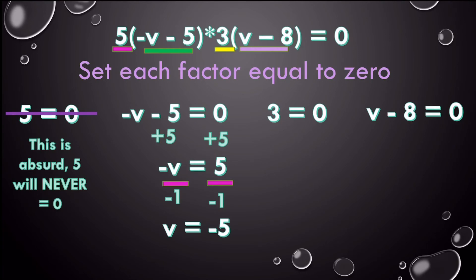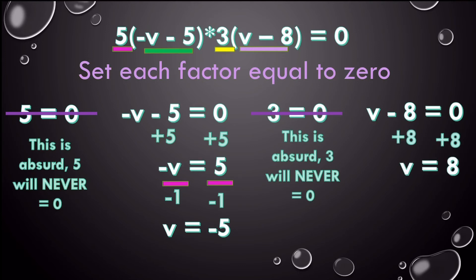Then I have 3 equals zero. Well, that kind of looks like the other one. And it's absurd. Again, will 3 ever equal zero? No. So just throw it out. It's not a possible solution. There's nothing you can do. Then I move on to my last factor. I'm going to add 8 to both sides. So v equals 8. Now there's a lot of work on this page.